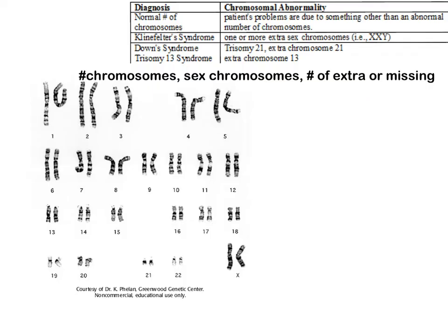So for this karyotype, I have 22 pairs — 44 chromosomes there — plus a pair of X chromosomes. So my notation for this karyotype would be 46 total chromosomes. And then since both my sex chromosomes look the same, they're X's, so it would be 46XX. I would then scroll on that page, look for a diagnosis, and this is a normal number of chromosomes, so my diagnosis would be that there is no chromosome abnormality.